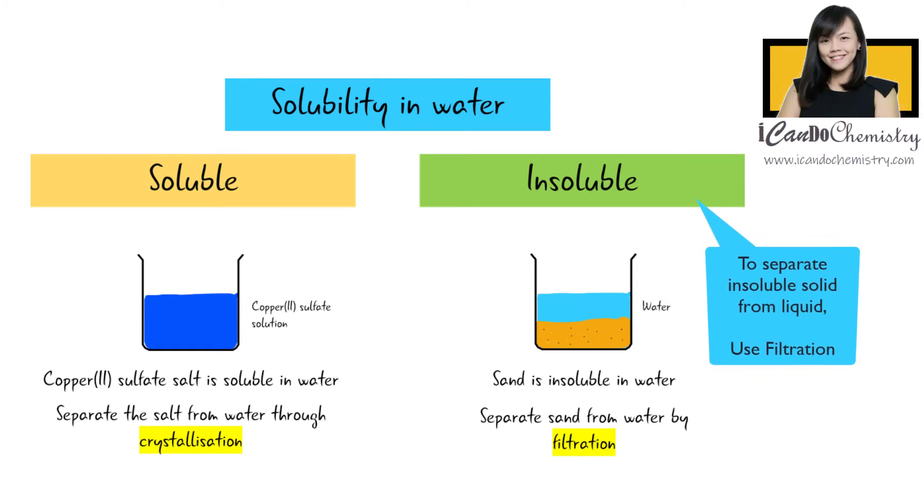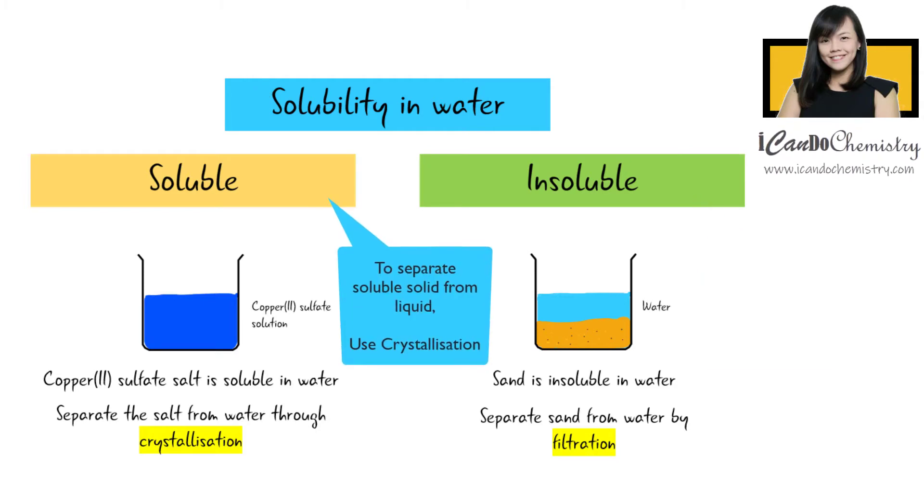In a nutshell, to separate an insoluble solid from a liquid, we can simply carry out filtration. To separate a soluble salt, which is the solute from the solvent, we will carry out crystallization.